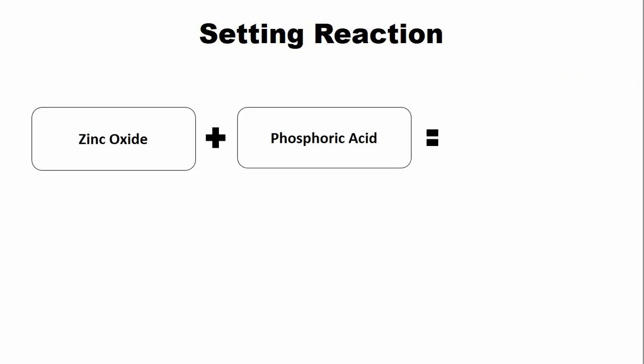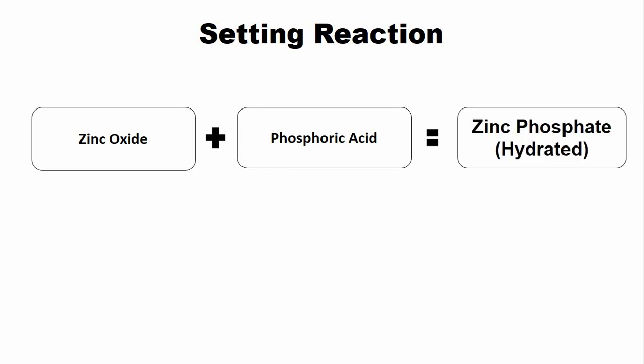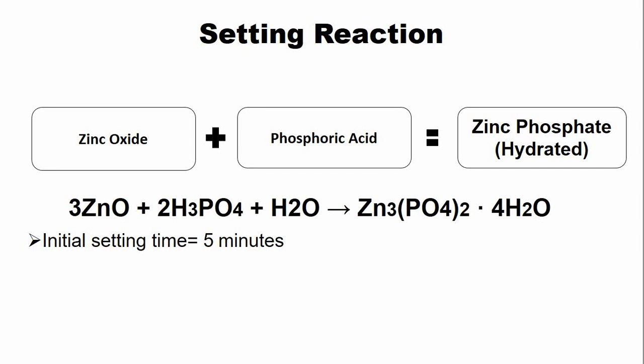Zinc oxide present in the powder reacts with the phosphoric acid present in the liquid to form hydrated zinc phosphate. This chemical reaction can be expressed as an equation, and the final product is hydrated zinc phosphate with water molecules attached to it. The initial setting time is five minutes; however, the final set may take around 12 to 24 hours.